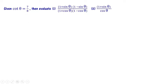Given cot theta equal to 7 by 8, evaluate: first, 1 plus sin theta times 1 minus sin theta divided by 1 plus cos theta times 1 minus cos theta; and second, 1 plus sin theta divided by cos theta.